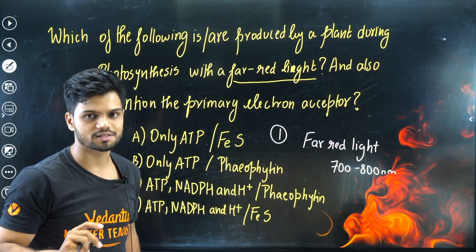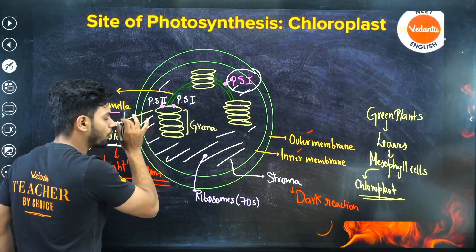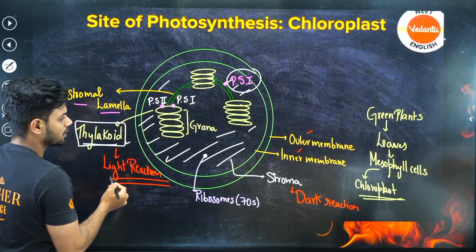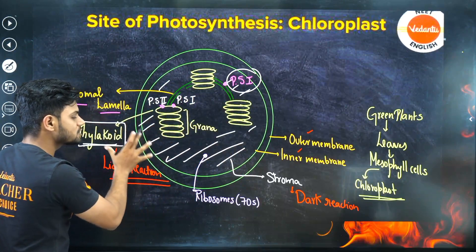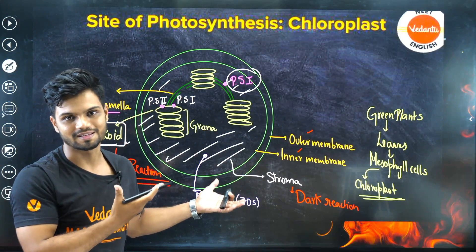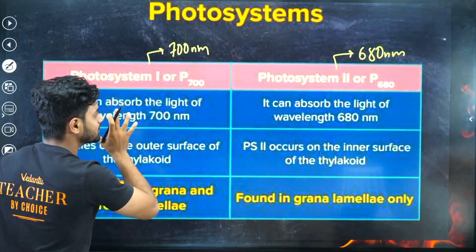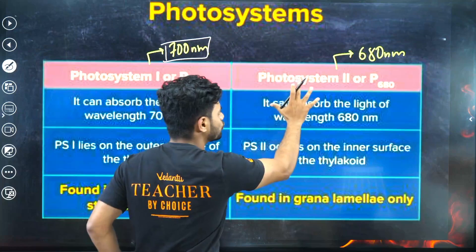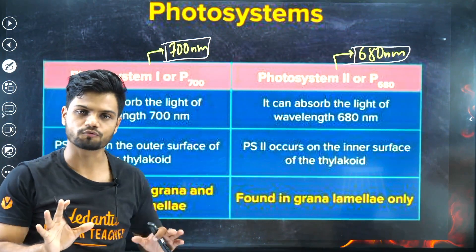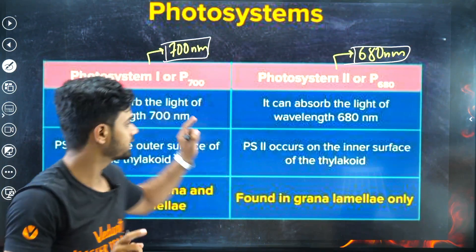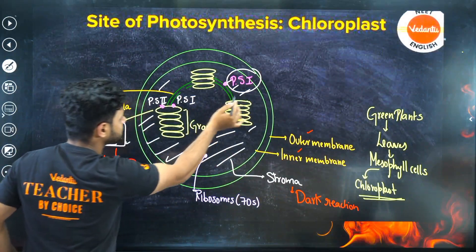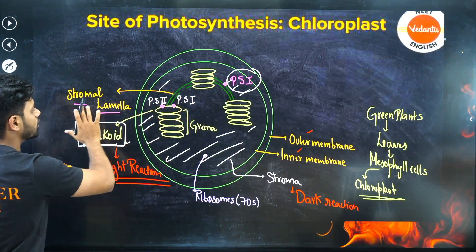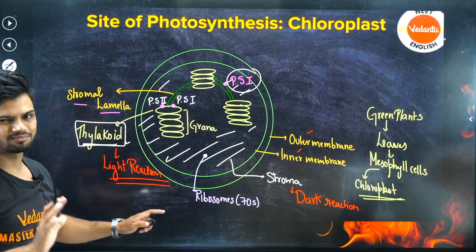In plants, there are only two photosystems: Photosystem 1 and Photosystem 2. Photosystem 1 is solely present on the stromal lamellae, while both Photosystem 1 and 2 are present on the thylakoid lamellae. Photosystem 1 works at 700 nanometers and Photosystem 2 works at 680 nanometers. Light reactions happen in the thylakoid, while dark reactions take place in the stroma.